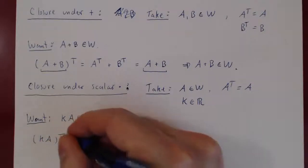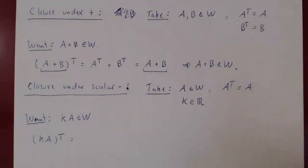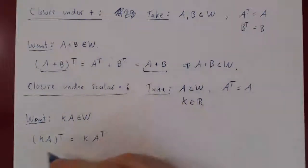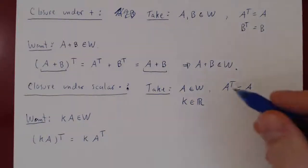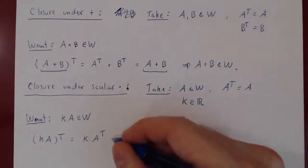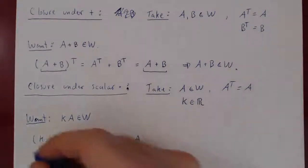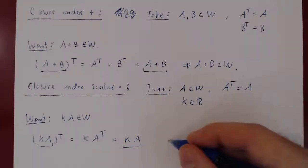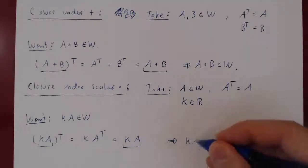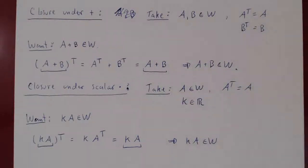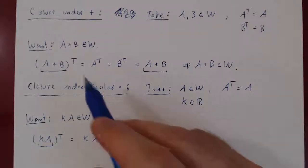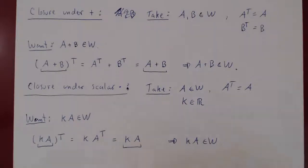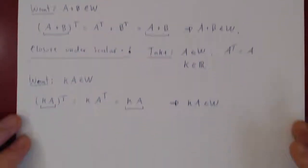Let's transpose KA. By properties of the transpose, (KA)^T equals K times A transpose. Since K is a real number and by assumption A is symmetric, A transpose equals A. So (KA)^T equals KA — we transposed KA and got the matrix itself. Therefore KA is symmetric, and KA is an element of W. We have closure under addition and closure under scalar multiplication. Therefore, by the subspace theorem, W is a vector space.